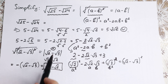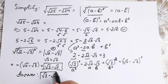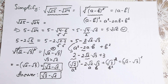So our answer is square root of 3 minus square root of 2 — not square root of 2 minus square root of 3, but square root of 3 minus square root of 2. I hope you understand this explanation. If you don't understand, write a question in the comments — I try to answer everyone. If you enjoyed this video, I really appreciate likes and comments. Thank you so much for watching, see you in the next videos.